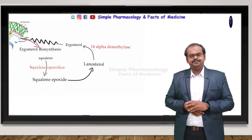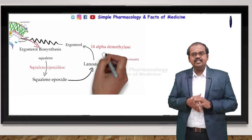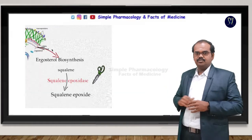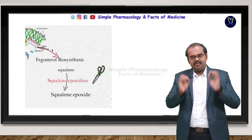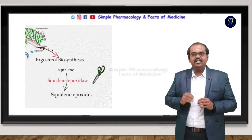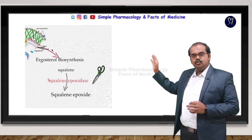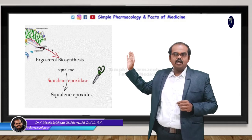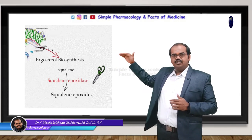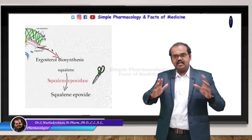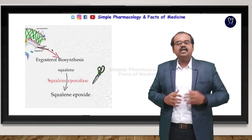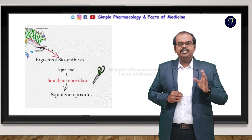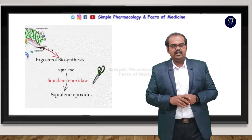Lanosterol is finally converted into ergosterol. Our drug terbinafine inhibits this pathway. We already know that azole derivative drugs inhibit the conversion of lanosterol into ergosterol. Our drug terbinafine, however, inhibits the squalene epoxidase enzyme, blocking that conversion. In a single line: terbinafine inhibits the squalene epoxidase enzyme — that is the mechanism of action.